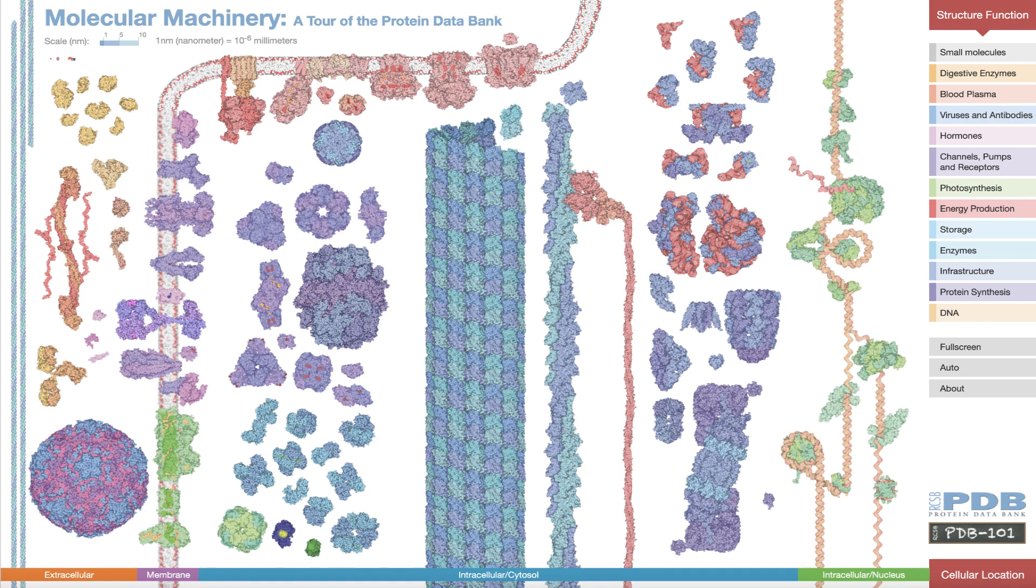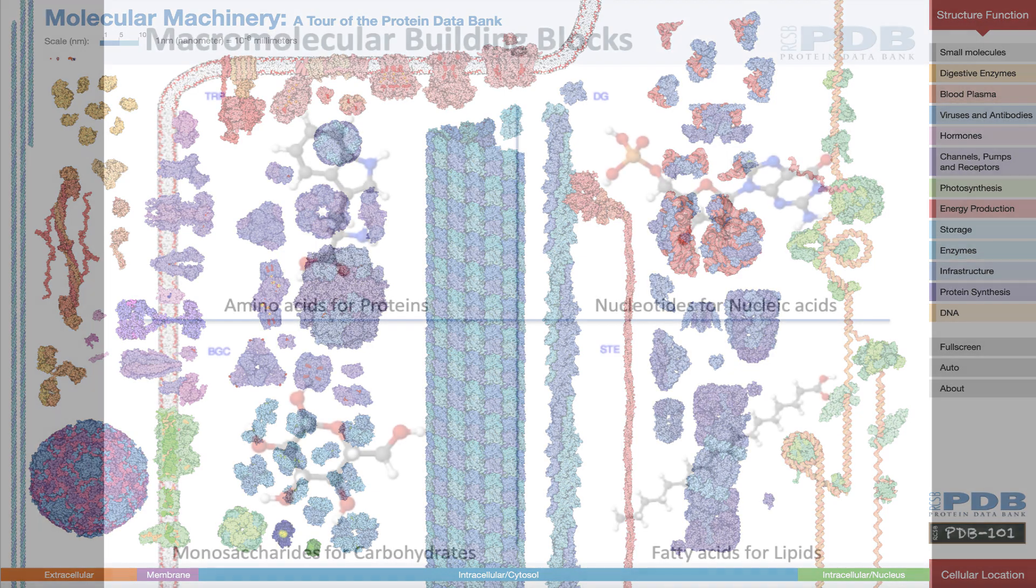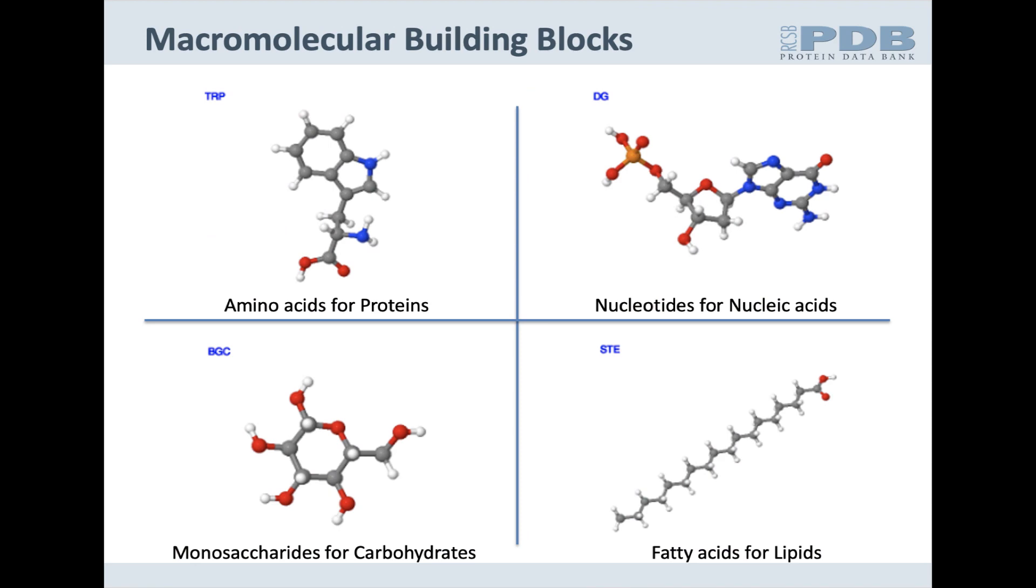These macromolecules are made up of smaller building blocks such as amino acids for proteins, nucleotides for DNA and RNA, etc.